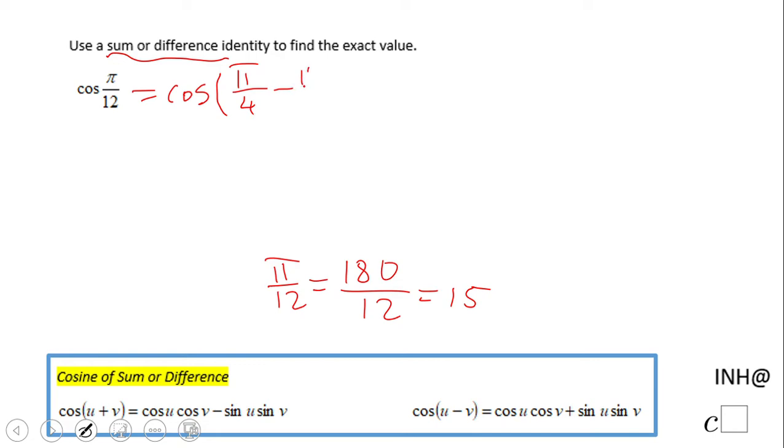Using this one now, because it's a minus, we're going to have this formula which says cosine of π/4 times cosine of π/6, and then be careful, this is a plus, sine of π/4 times sine of π/6.